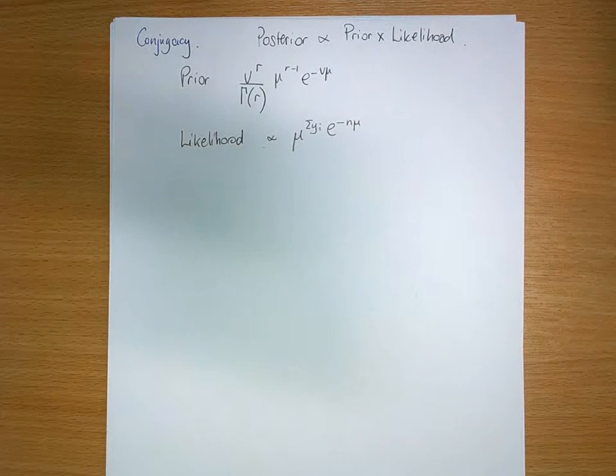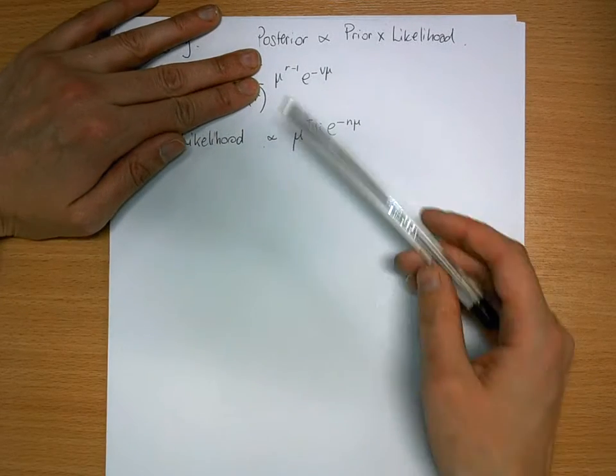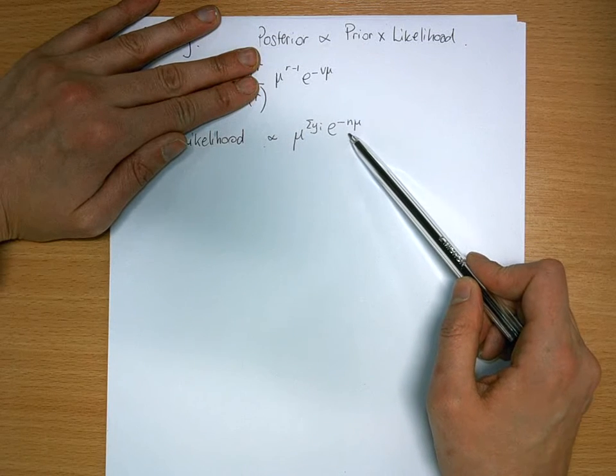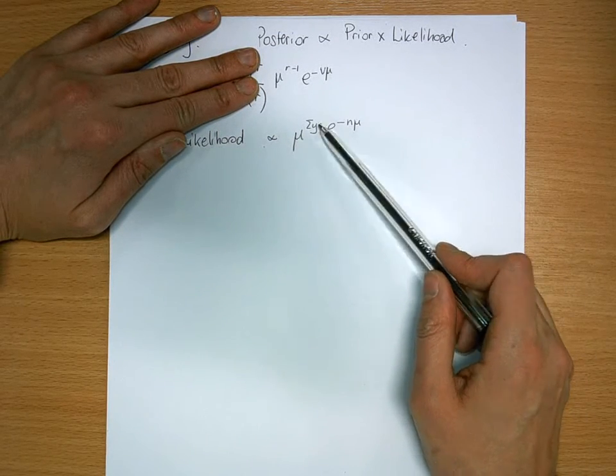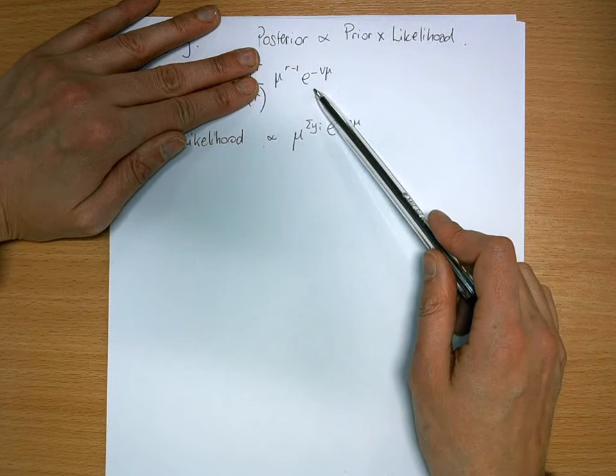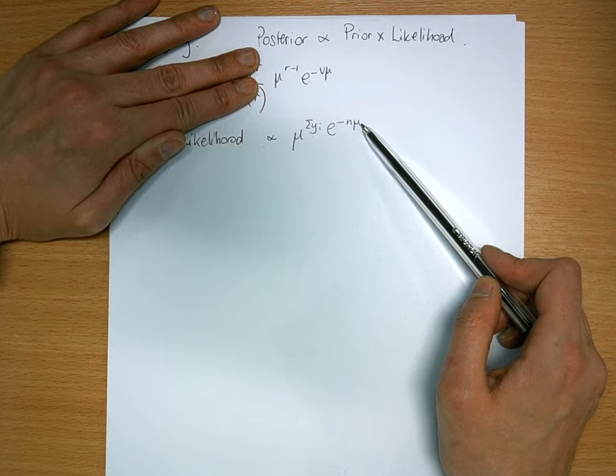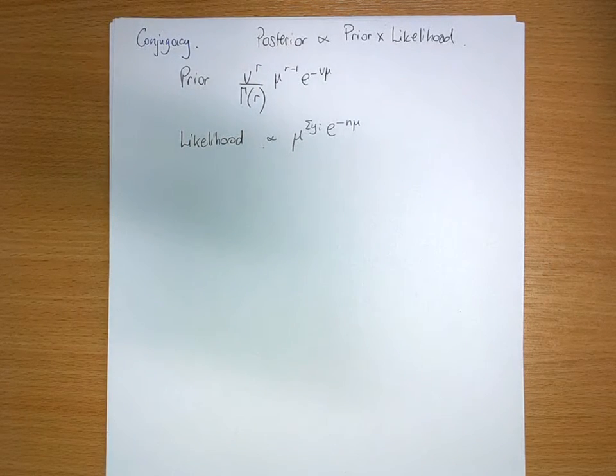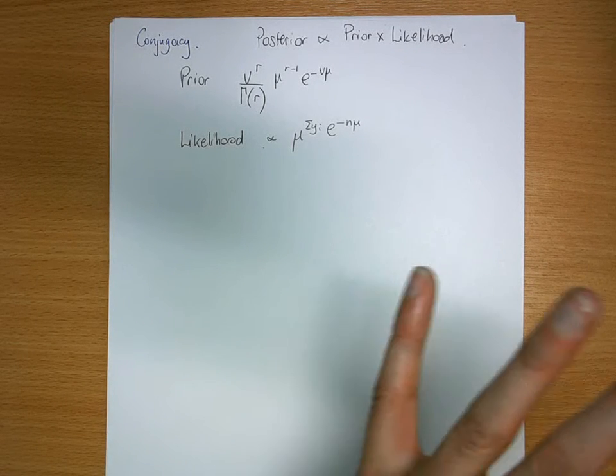Here, if you do a matchy-matchy job, you'll see, if you ignore your constants, these are very similar in form. Would you agree with that? You have mu to the power of something and e to the power of something that happens to be a function of mu. That's always reassuring when you're looking for conjugate priors, because it means things will nicely slot together and behave themselves.